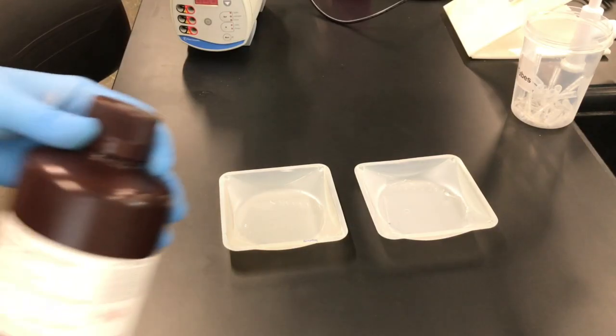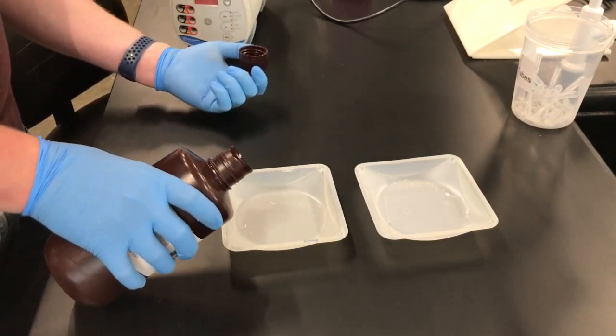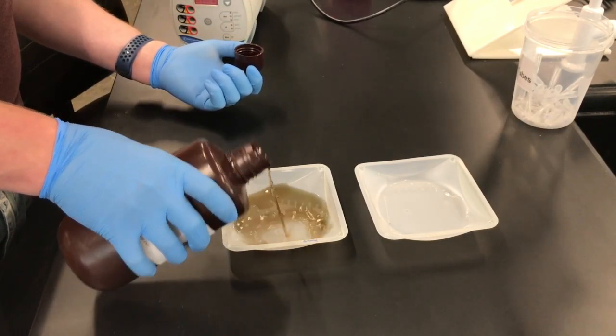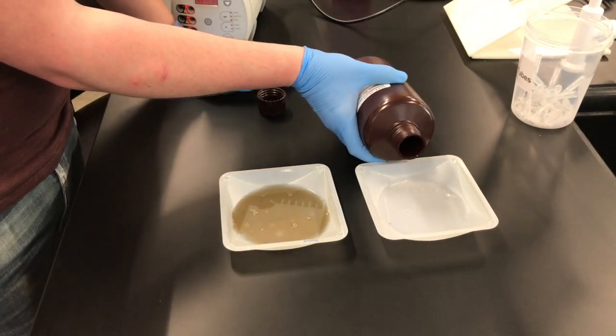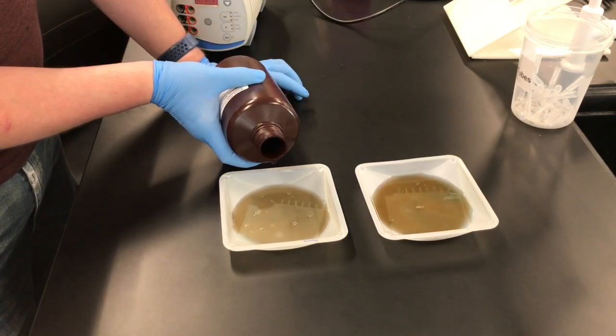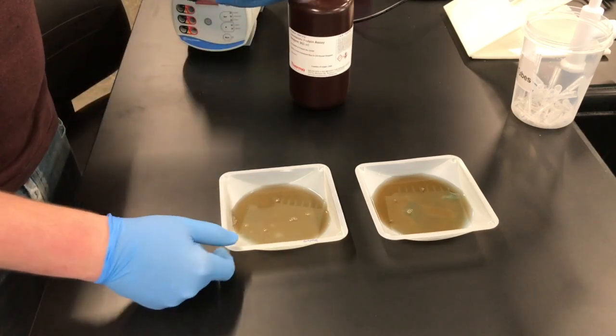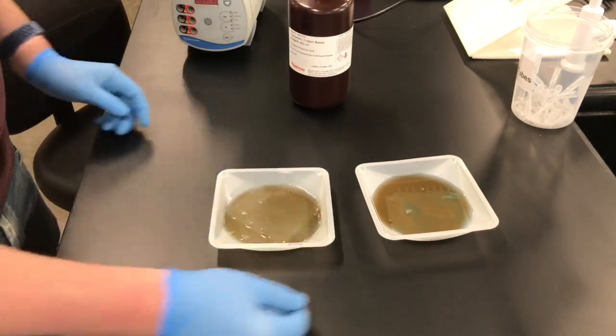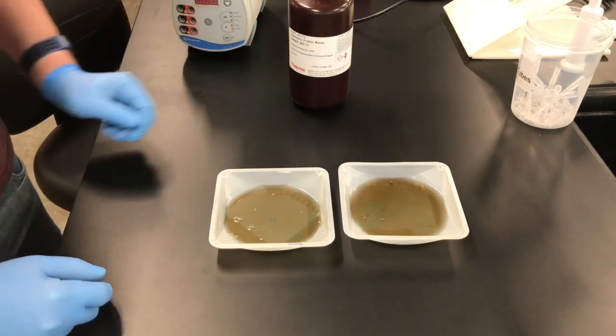For the Coomassie staining of gels, we're actually going to be using the same reagent that we used in last week's lab for the protein quantification Bradford assay. We're going to pour it onto the gels and then set these in a shaker incubator at 37 degrees for about one hour, rotating at about 60 revolutions per minute.